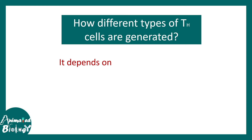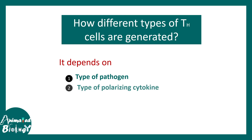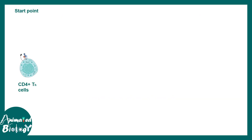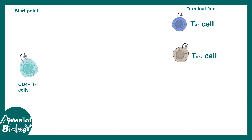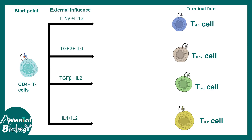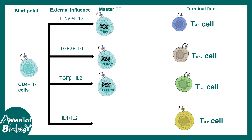How are these different T cell subtypes generated? The instructions come from combinatorial cytokine signals. Depending on the type of pathogen, distinct polarizing cytokines trigger the ultimate fate of a T helper cell. A naive CD4 T helper cell can terminally differentiate into TH1, TH17, T regulatory, or TH2 subpopulations. Polarizing cytokines activate specific master transcriptional regulators: TBET for TH1, RORγT for TH17, FOXP3 for Treg, and GATA3 for TH2.